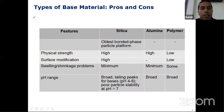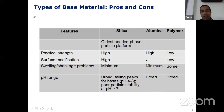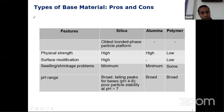So, the next one — I was talking about the base material. Silica is the most popular base material. Because, as you can see, it has got several advantages in terms of physical strength, which is pretty high. You can actually modify the surface, which is also very high. It is the older bonded phase particle platform. And the swelling or shrinkage problem is minimum.